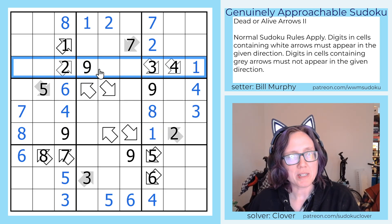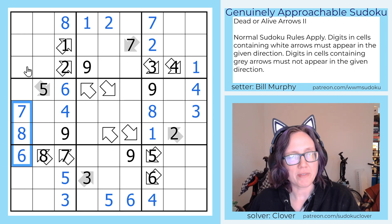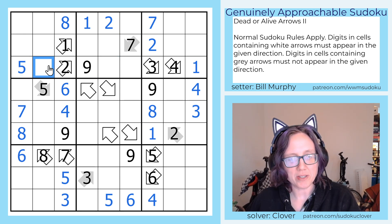In this row we need 5, 6, 7, and 8. 6, 7, and 8 makes this a 5. We can't put a 7 in these cells, so 7 has to go here. And then we need 6 and 8, there's a 6 there which resolves which way around those go.